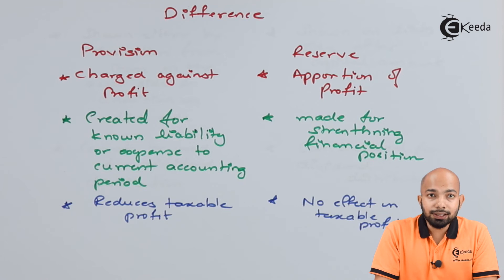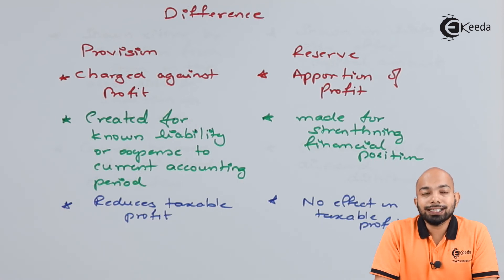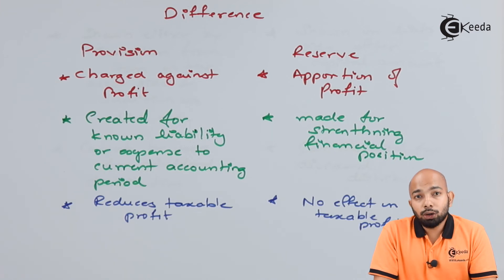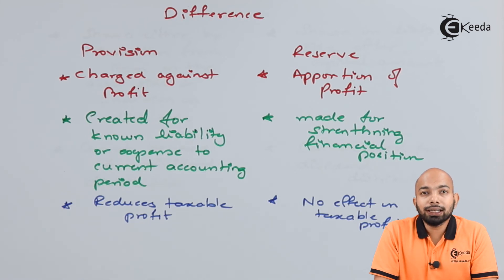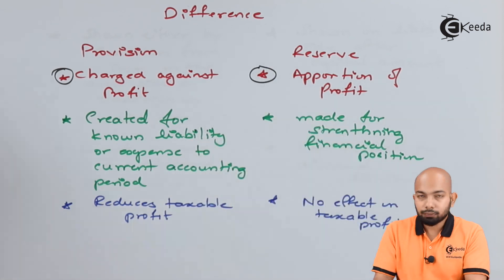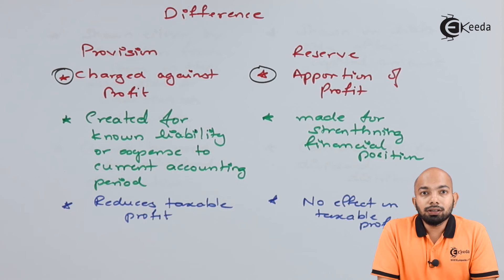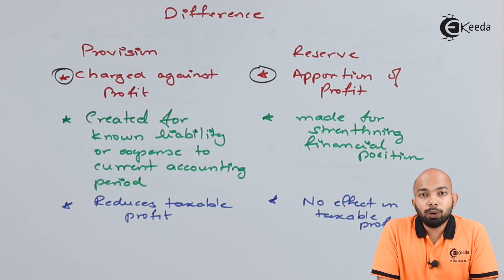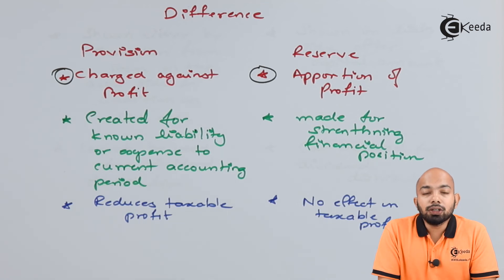We will now talk about the differences between provision and reserves. Provision is charged against the profit and loss account, whereas reserve is an apportionment of the current profit and loss account. Provision is a deduction when charging profit and loss account. Reserve, however, is a mere segregation of profit and loss account — you divide or make parts of reserves from profit, but it is not a deduction.